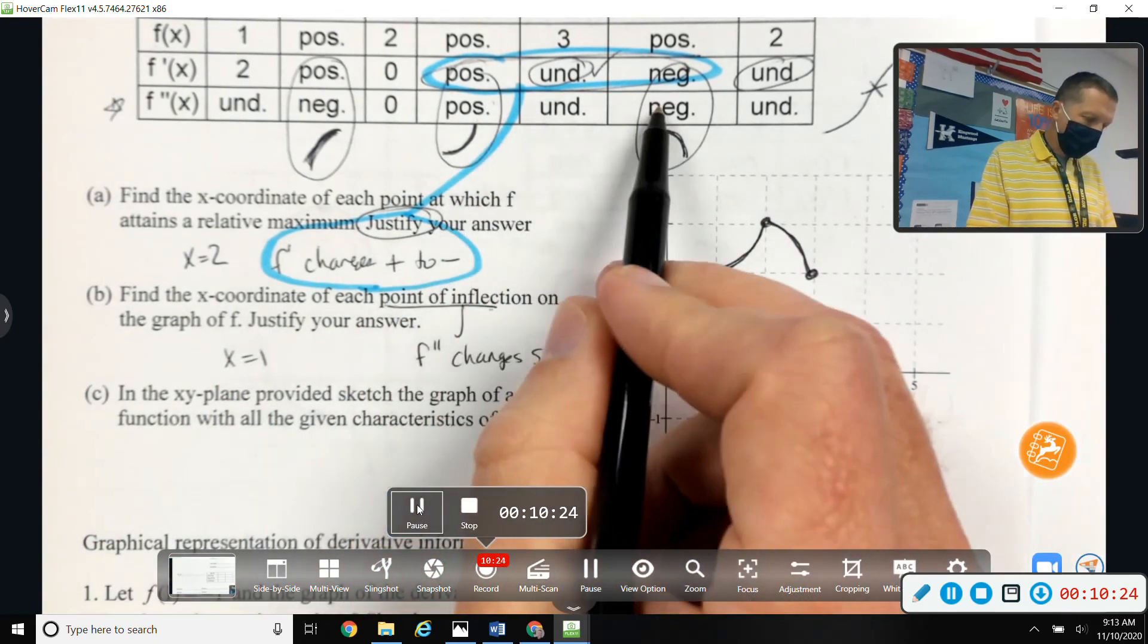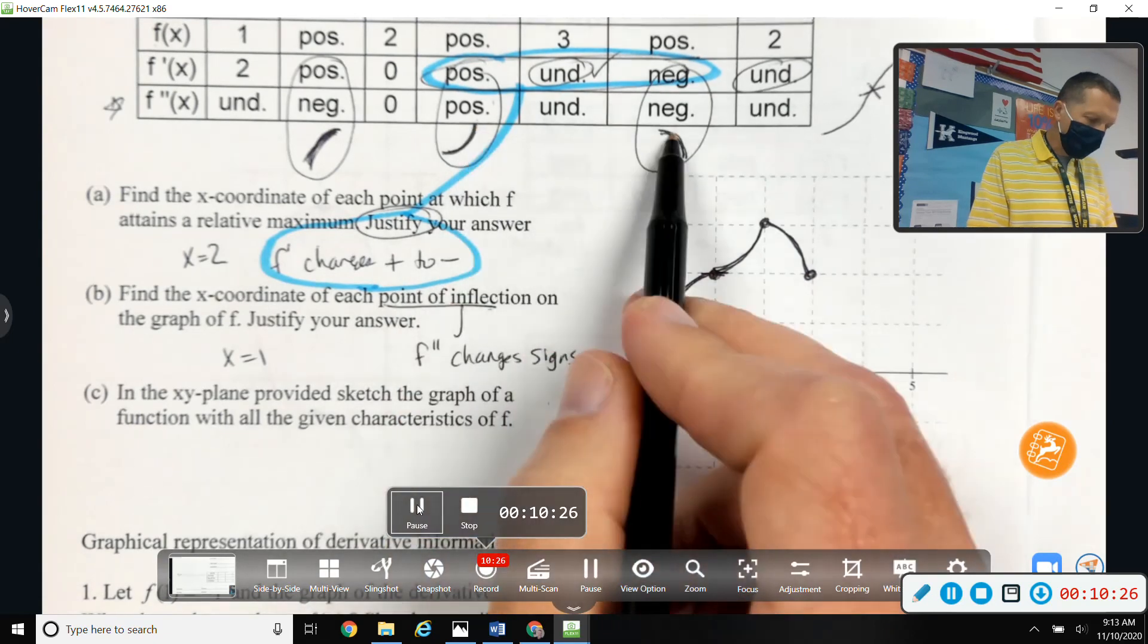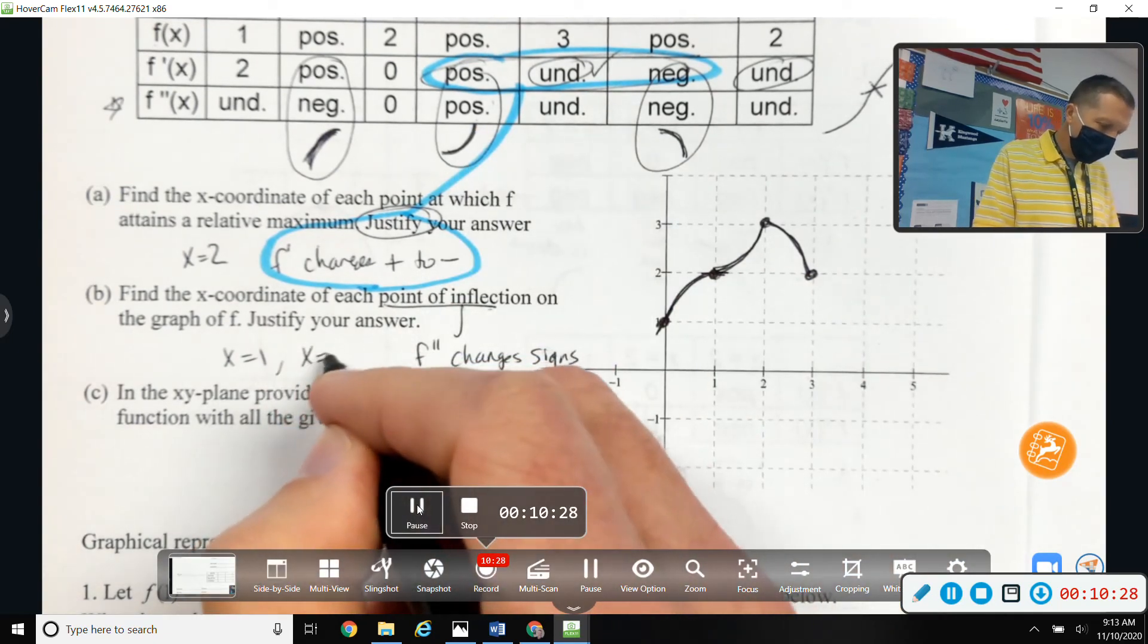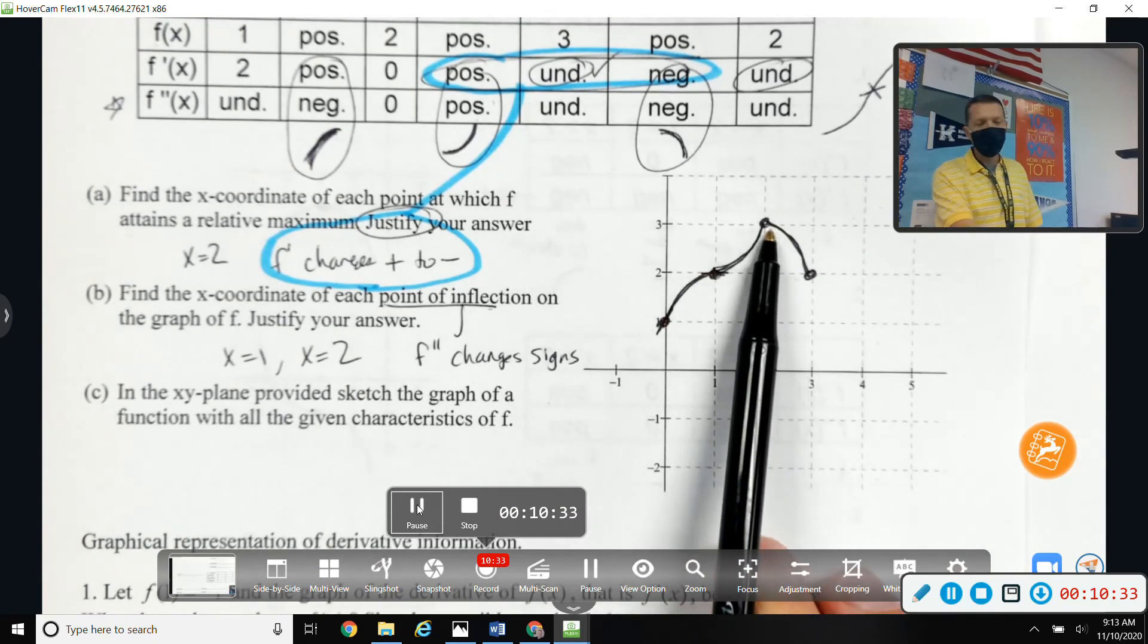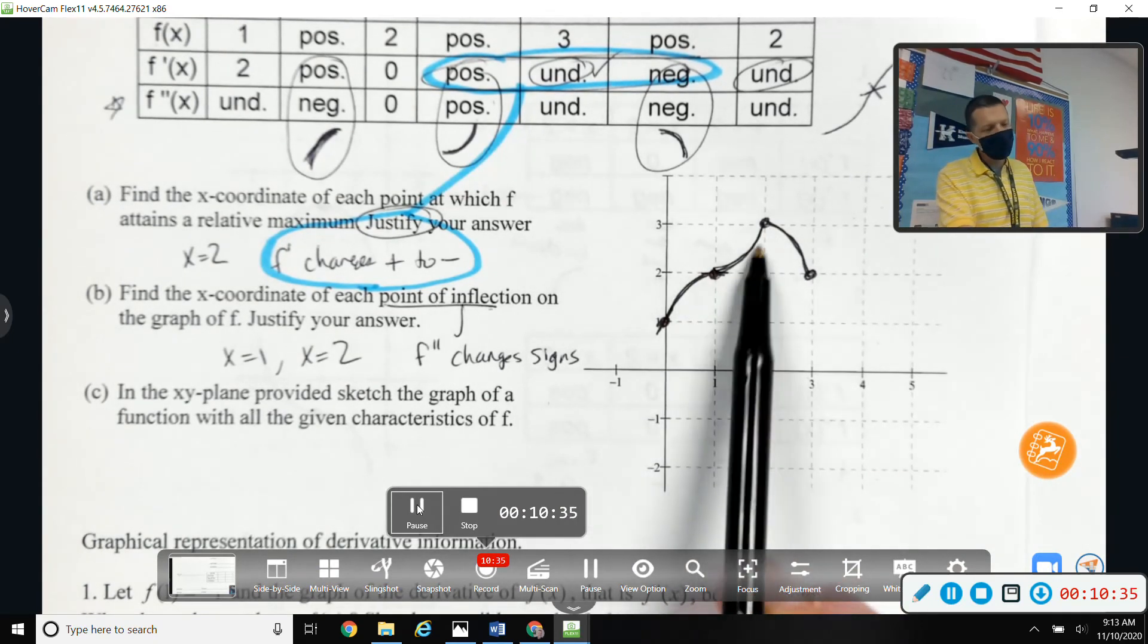And then x equals 2 it changes positive to negative. That's a little bit odd that it changes anyway, because there's a cusp there, but it still changes from being concave up to concave down.